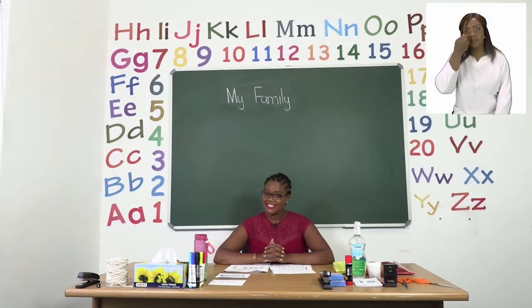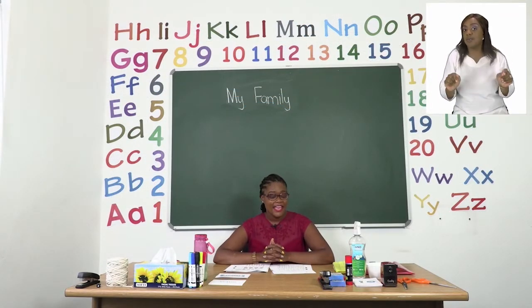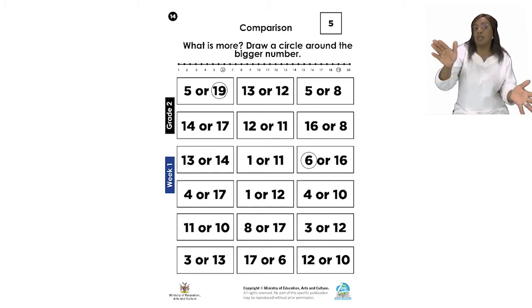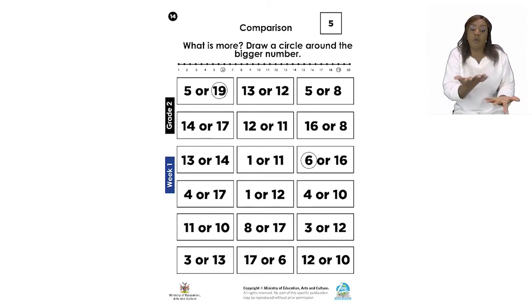Our first exercise for today can be found on page 14. On page 14 we are doing comparisons. Now it is asking what is more? What is more? And we are going to draw a circle around the bigger number. Remember bigger numbers on a number line are further down the number line. If you look at the example they gave you, they have already circled the bigger number. They asked which one is bigger or what is more? Is it 5 or 19?